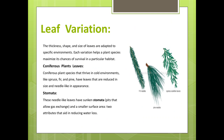Leaf variation: the thickness, shape and size of leaves are adapted to specific environments. Each variation helps a plant species maximize its chances of survival in a particular habitat. Coniferous plant leaves: species that thrive in cold environments, like spruce, fir, and pines, have leaves that are reduced in size and needle-like in appearance. These needle-like leaves have sunken stomata and a smaller surface area — two attributes that aid in reducing water loss.